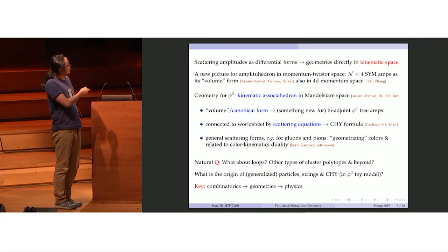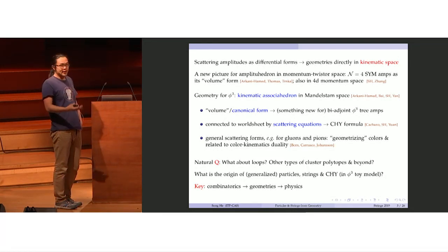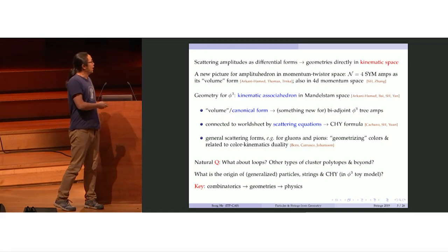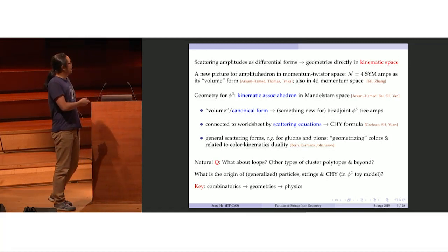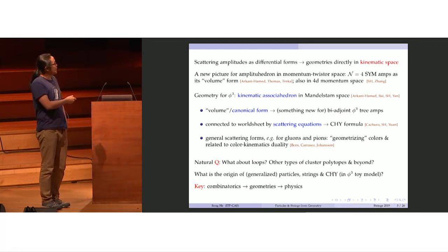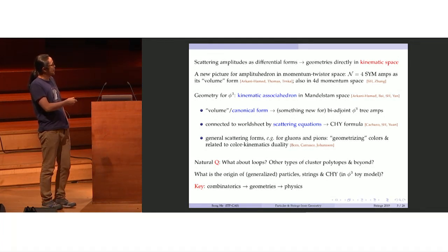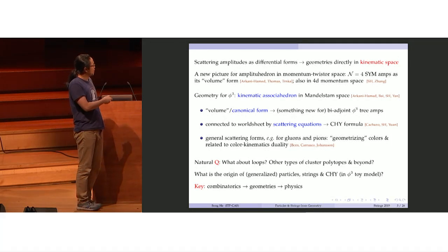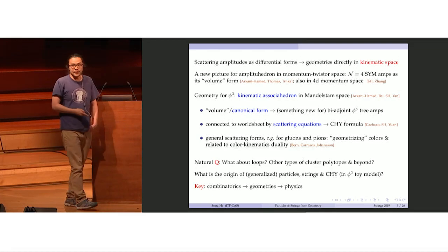Based on this work, it's very natural to ask: what about the loop extensions? It turns out the loop-level phi-cube amplitudes are related to other types of cluster polytopes. Throughout the talk, we'll see that particles, strings, scattering, and CHY all arise from the geometries in a way that we first see combinatorics, and then geometry, and finally physics.